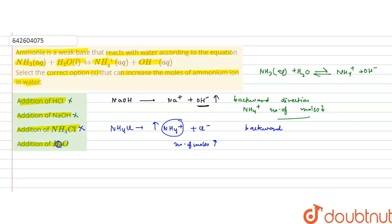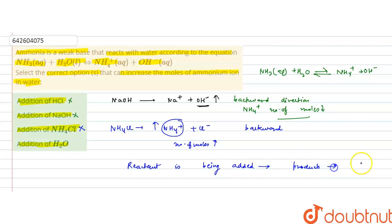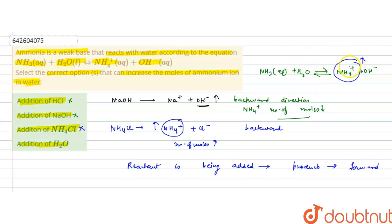The last option is the addition of water. Adding water means a reactant is being added, so the reaction shifts in the forward direction, increasing the concentration and number of moles of ammonium ion. The equilibrium also shifts forward to oppose the change, so ammonium ion concentration ultimately increases. This is the correct answer — addition of water will increase the number of moles of ammonium ions.